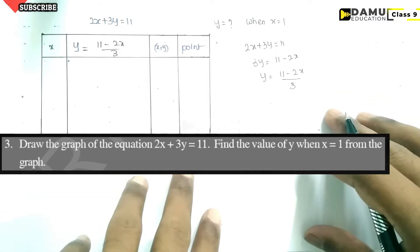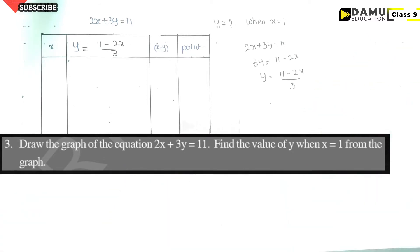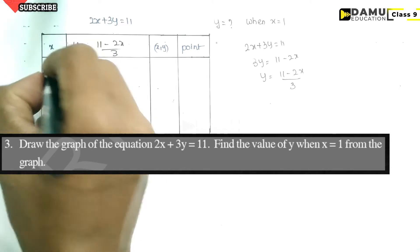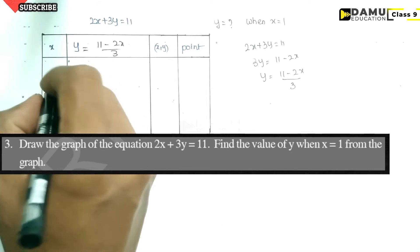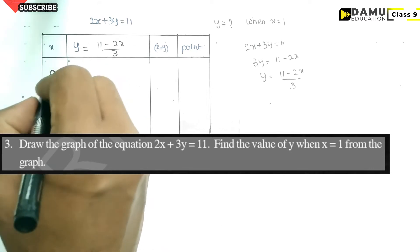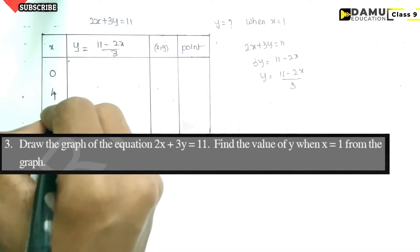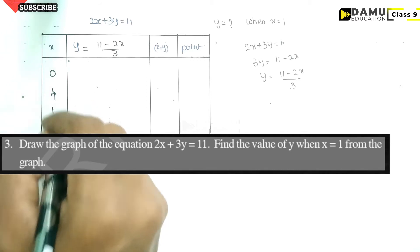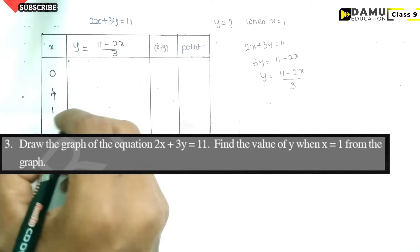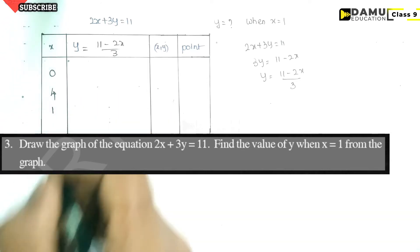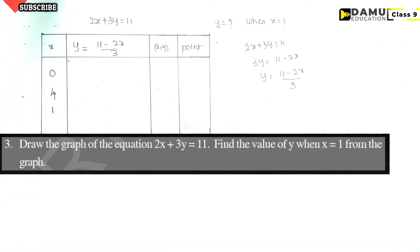Now, we have to find the given values. We need to find the values of x and y, and find the solutions before going to draw the graph. First, let us take x equals 0, then x equals 2, then x equals 4, and x equals 1. Like this, we need to find the solutions.